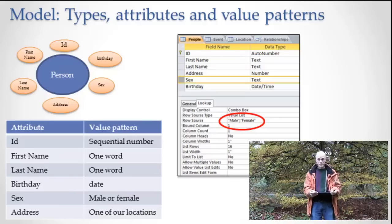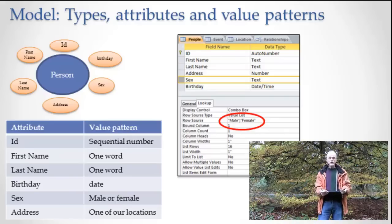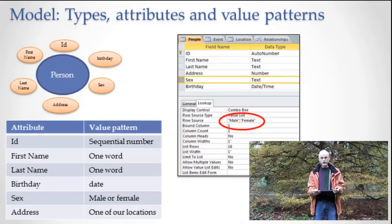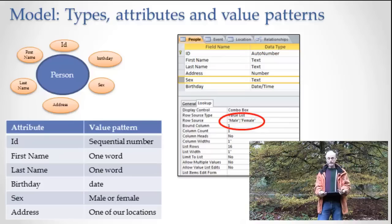And the only difference is the vocabulary that they use. I chose the vocabulary of types, attributes, and value patterns because I wanted to be as generic as possible. In database terminology, we don't say types, attributes, and value patterns. We'll say tables for types. We'll say columns for attributes. And we'll say data types for value patterns. But in all other ways, it's really the same.